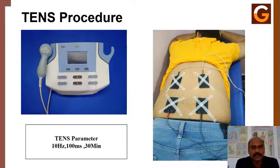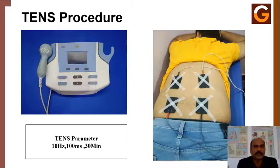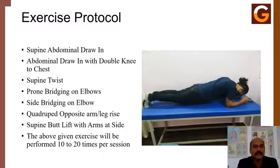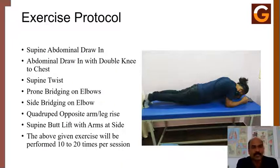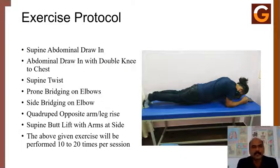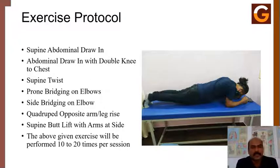The TENS application procedure used 10 Hz frequency and 100 millisecond pulse duration for 30-minute sessions. The exercise protocol mainly focused on core stability exercises taught to patients to repeat 10 to 20 times, twice daily for a two-week program. Exercises included supine abdominal drawing, abdominal drawing in double knee-to-chest, supine twist, prone bridging on elbows, side bridging on elbows, quadruped arm and leg raise, and supine butt lift with arms at the side.